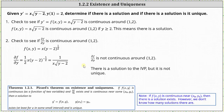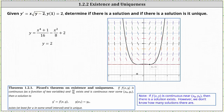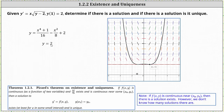Looking at the slope field for y prime equals x times the square root of the quantity y minus two, the initial value problem has two solutions. First, there is a polynomial solution, and second, there is the trivial solution — the constant function y equals two. The polynomial solution is graphed in black and fits the slope field, passing through the point one comma two. The line y equals two also passes through one comma two, and when y equals two, y prime equals x times zero which is zero, consistent with a slope of zero. Both are valid solutions, which is why the solution is not unique.